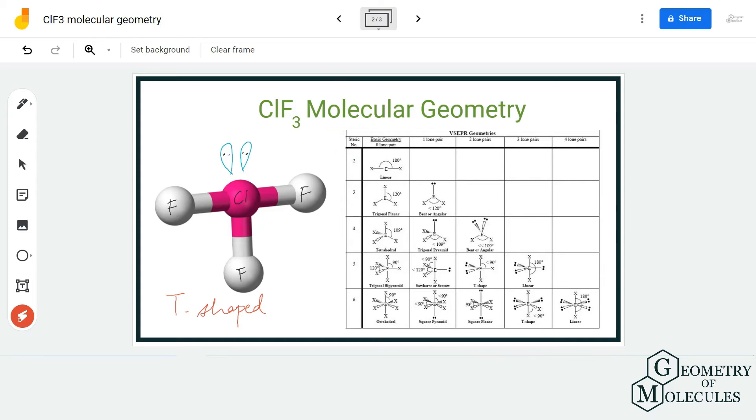So when it comes to steric number, it is the sum total of all the electron regions on the central atom. Here the central atom is forming bonds with three fluorine atoms, so there are three regions of bonds.